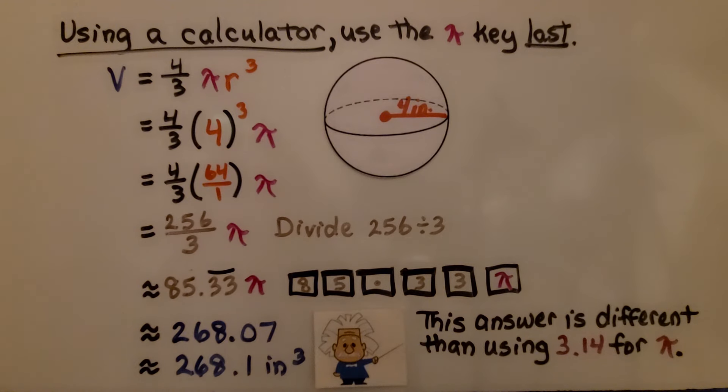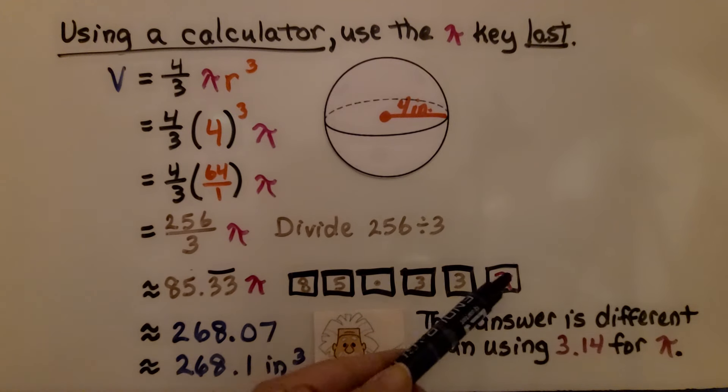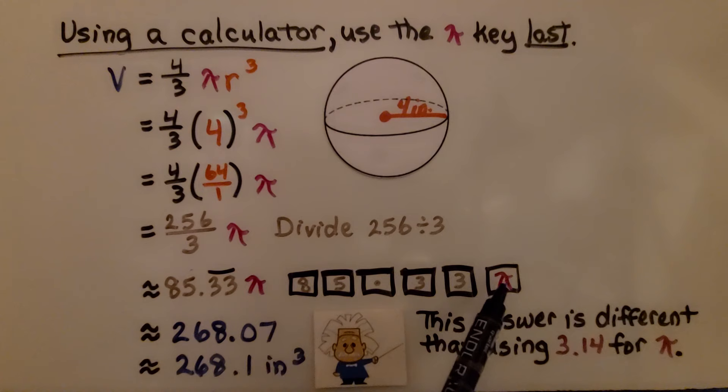If you scroll back to one of the earlier examples, we got 267.9. That is a little bit different than when we actually used the pi key, because the calculator accounts for more digits for pi than 3.14.